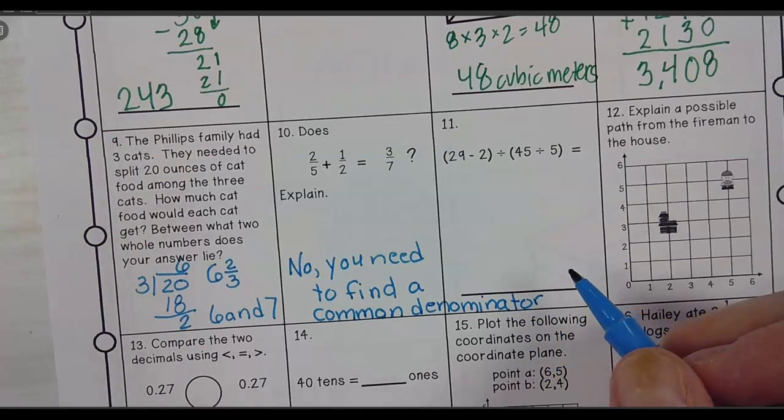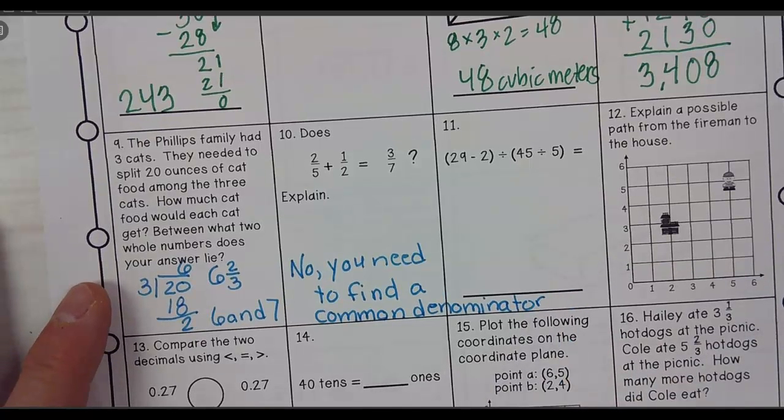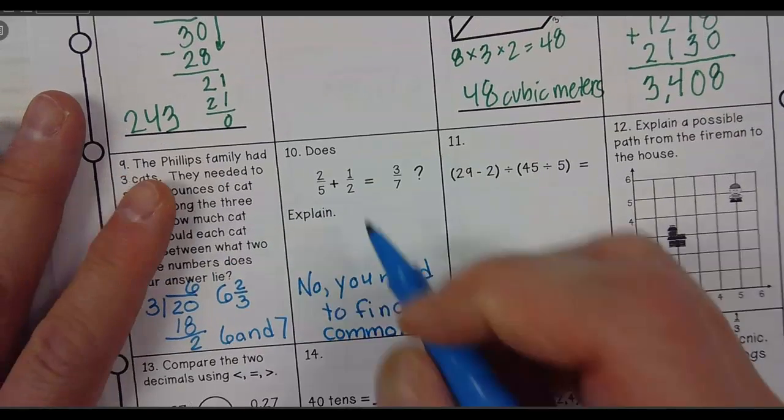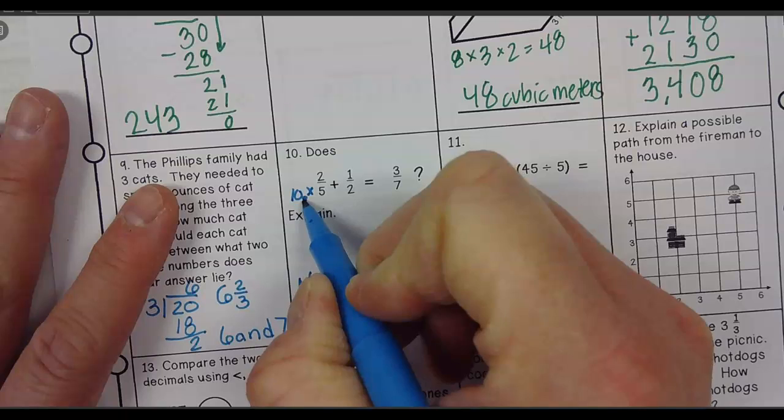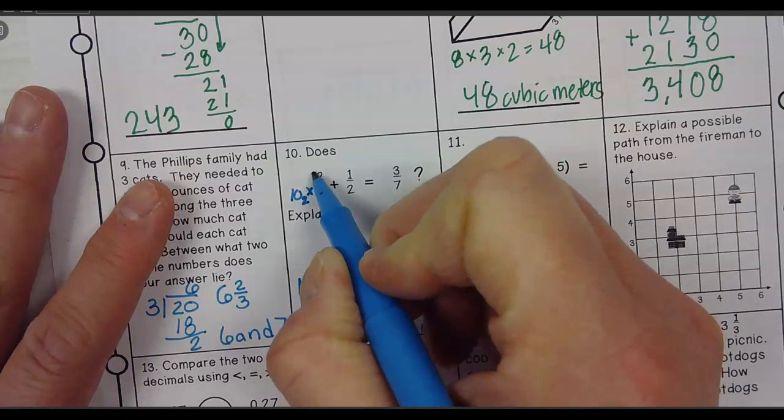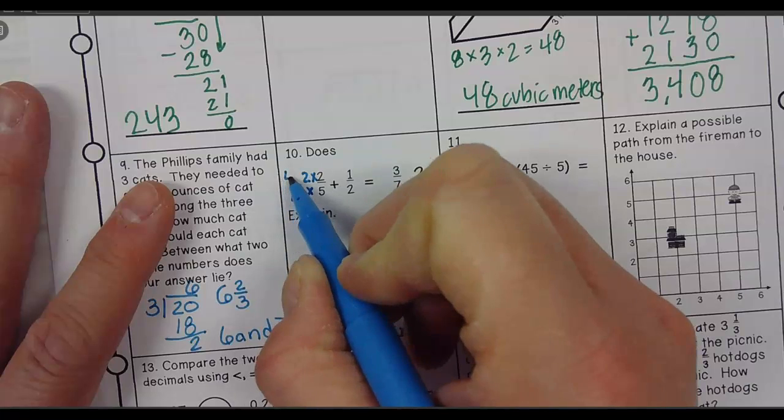So my common denominator would be 10. So I'm going to multiply this one by 2. So if I multiply the bottom by 2, I multiply the top by 2 times 2 is? 4. 4 tenths.